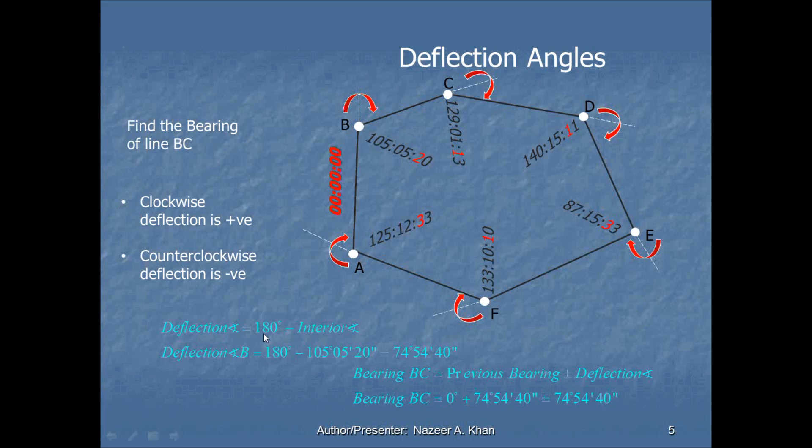Right now, we have 180 degrees minus the interior angle. 180 degrees minus 105 degrees 05 minutes 20 seconds will give you a deflection angle that's positive of 74 degrees 54 minutes 40 seconds. I'm going to take that deflection angle and add it to the previous bearing. Now, we are pretty lucky that the previous bearing is 0 degrees 0 minutes 0 seconds.